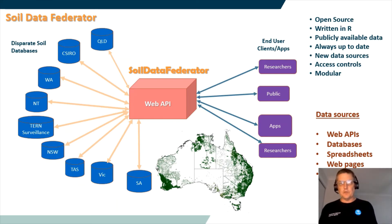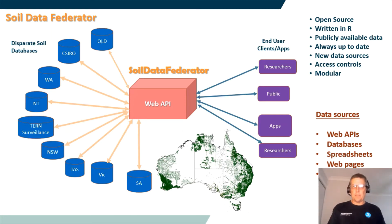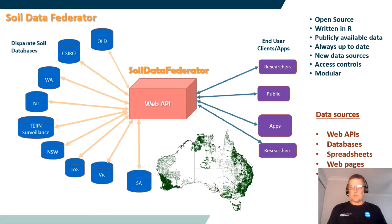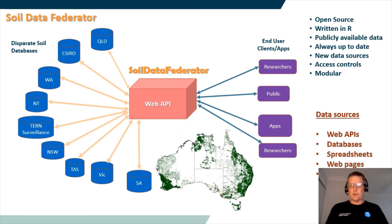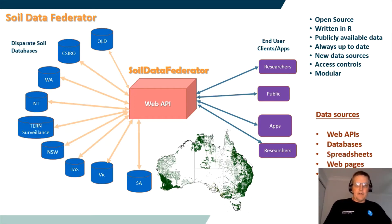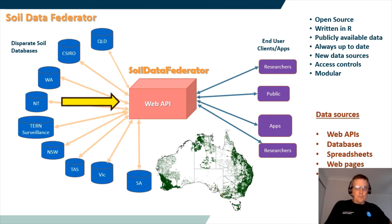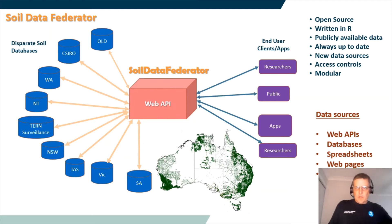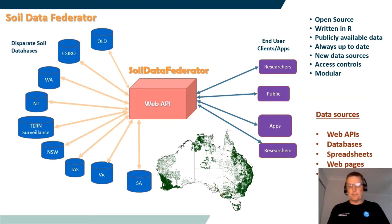Fortunately, with Tern's longer-term funding, we were able to learn from our initial attempts with the Soil Landscape Grid version one and build on those to come up with a better way of accessing soils data — that's the Soil Data Federator. It's open source, written in the R programming language, and uses publicly accessible data. It's always up to date, it's easy to incorporate new data sources because it's modular, and we have access controls which can be applied over data sets to restrict access. Basically, you send a request to the Soil Data Federator, it transforms that request into the native request form for a data store, sends it to the native data store, which responds in its native format. The federator then translates that into a standardised format and returns it to the user. The data sources the federator can use are various — including web APIs, databases, spreadsheets, web pages, text files, whatever really.